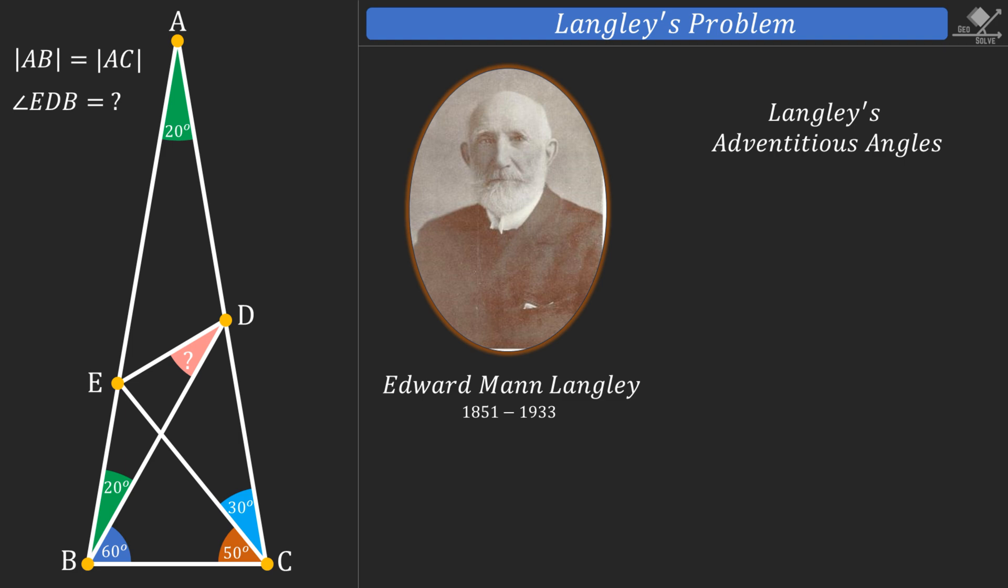In the problem, we have an isosceles triangle with a 20-degree apex angle. And for the given angles, we need to find the angle with the question mark.